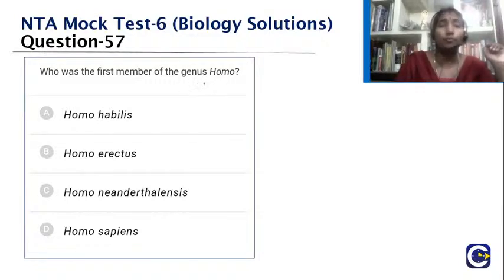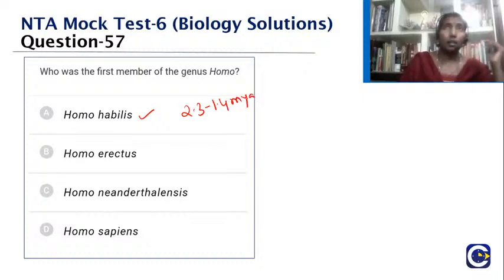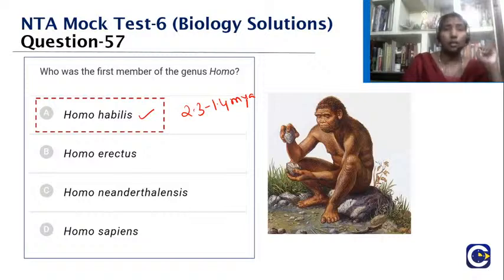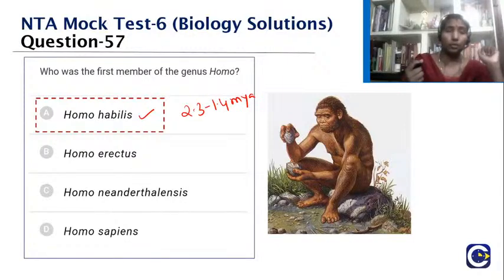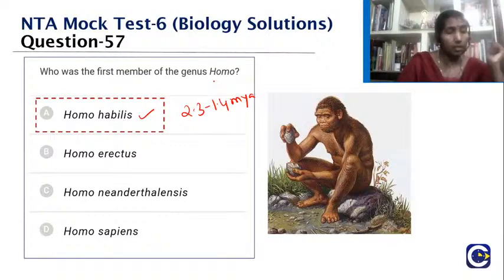Who was the first member of the genus Homo? The oldest member is Homo habilis, which existed around 2.3 to 1.4 million years ago in East Africa, associated with butchered animal bones and simple stone tools. So Homo habilis was the first member of the genus Homo.